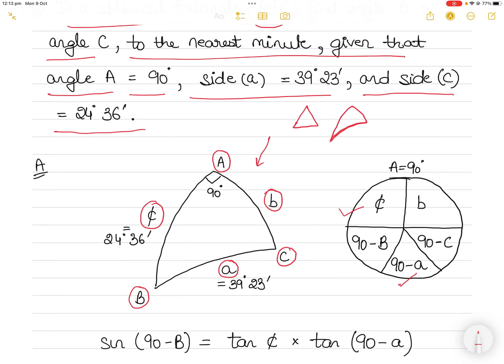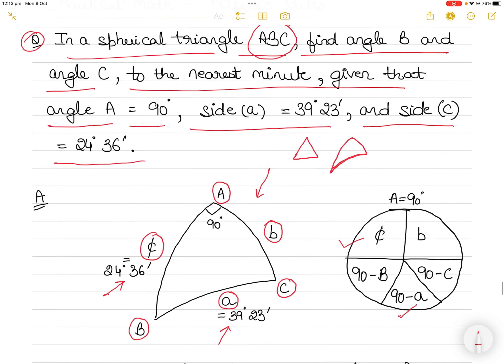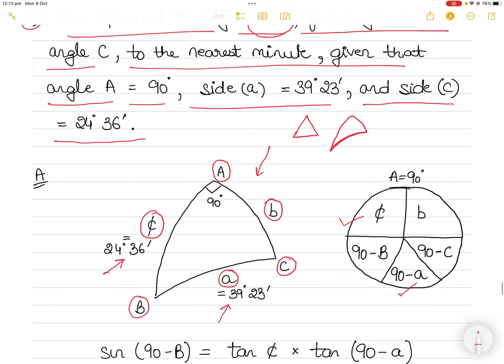Once you have drawn the triangle, label A, B, C and label the sides a, b, c opposite to the angles, then write the values of the ones that are given to you. In this case, I was given side a and side c, and I have to find angle B and angle C. Angle A is already given.